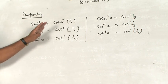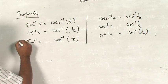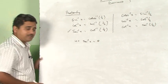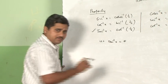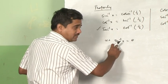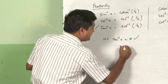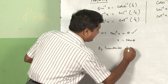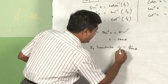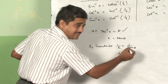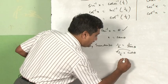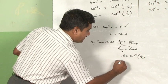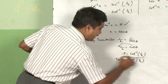Let us try one problem to understand how these properties are true. I will take tan inverse x. Let tan inverse x equal to theta, because all inverse trigonometric functions are basically angles, so we represent them in the form of theta. Then x is equal to tan theta. By invertendo, 1 by x is equal to 1 by tan theta, resulting in 1 by x equals cot theta. We know 1 by tan theta is equal to cot theta. Bringing cot theta to the left side, theta is equal to cot inverse 1 by x.